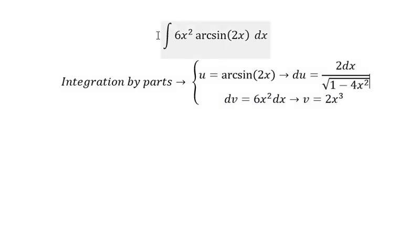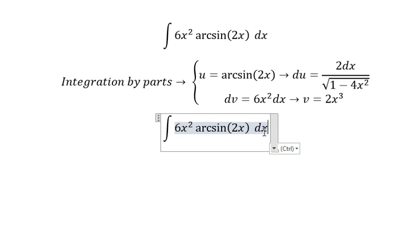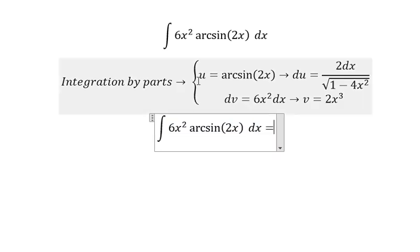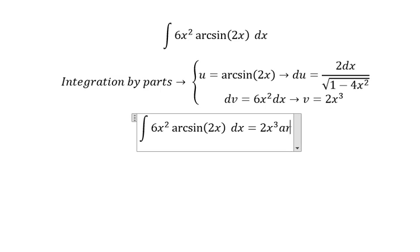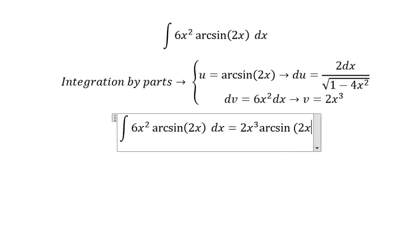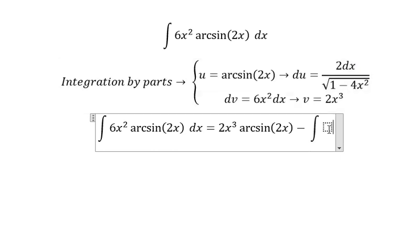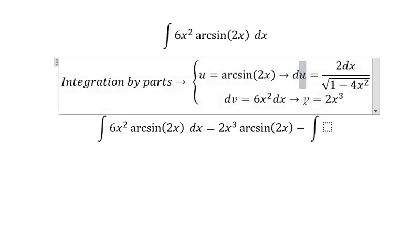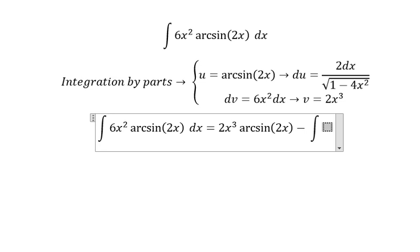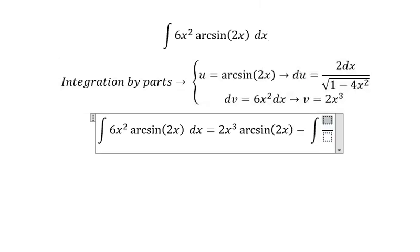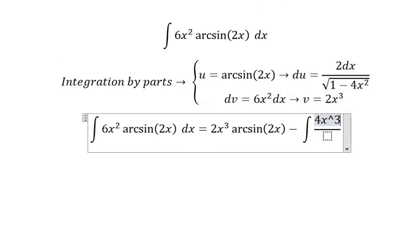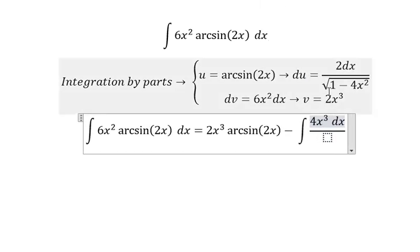Next we have u times v and the integral of v du. So we get 2x cubed arcsin(2x) minus the integral of 4x to the power of 3 dx over the square root of 1 minus 4x squared.